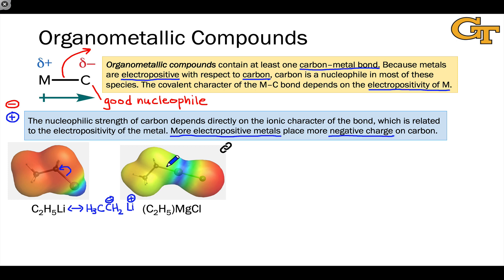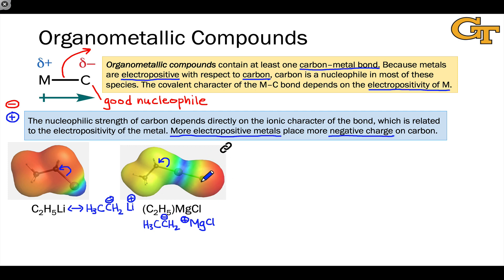For the Grignard reagent, we can also draw a resonance structure where we push the electrons in the carbon-magnesium bond onto carbon. The structure we get has negative charge on the carbon atom, indicating that it's a good nucleophile, and positive charge on the magnesium atom. One other thing to notice is that the chloride has a very large electron density thanks to the electronegativity of chlorine — that's why we see a deep red color on the right-hand side of the Grignard reagent.